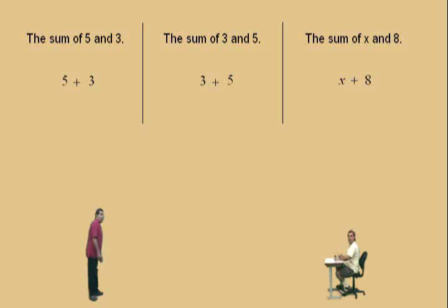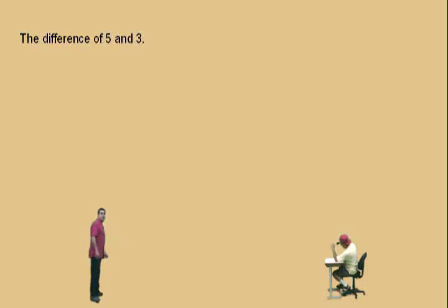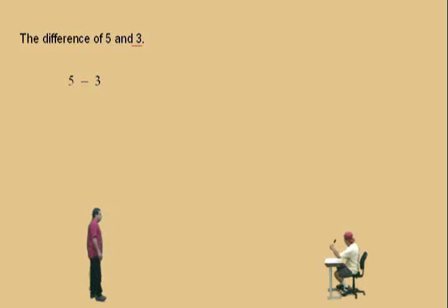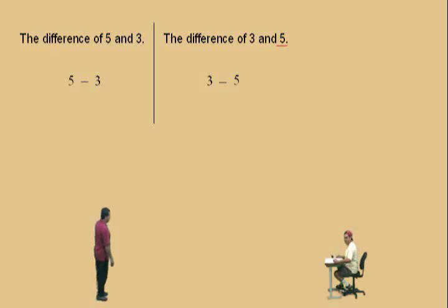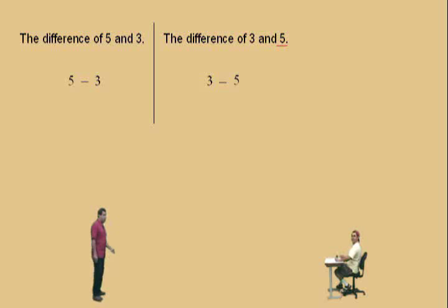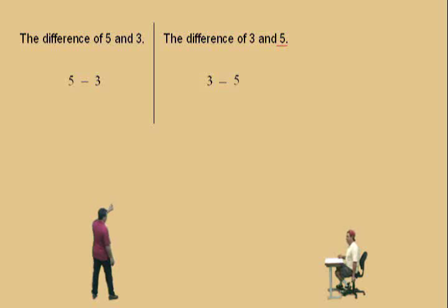Okay, very nice there, Charlie. Let's do some more — we're going to go into underline mode. Go ahead and read and translate. The difference of 5 and 3. Very nice. Let's do another one. The difference of 3 and 5. Now realize with these two differences, the order is very important. The difference of 5 and 3 — what does 5 subtract 3? That is 2. But in the second one, the difference of 3 and 5 — what does 3 subtract 5? Negative 2.